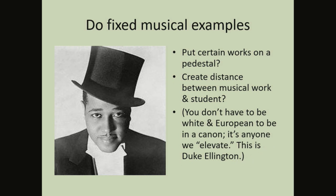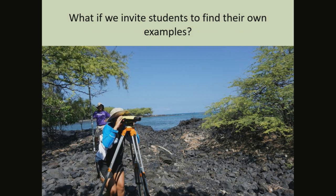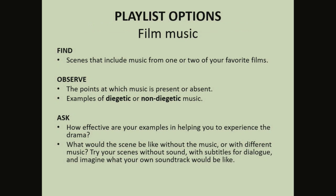I don't mean any disrespect against people in the canon — my personal specialty as a scholar is 16th and 17th century European music, and I love most of these composers, as I do Duke Ellington. But it made me wonder: in the music appreciation textbook, is the fixed, canonic set of musical examples necessary? Is it really helpful to students? Instead, what if we empower students to search for and assess music themselves? Would this be more engaging and more pedagogically sound? So in my textbook I use playlist options sections instead of fixed musical examples — I don't know of any other music appreciation text that does this.